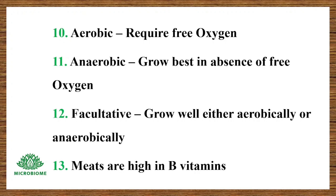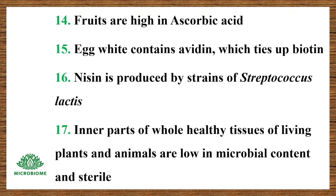Meat is high in B vitamins. Fruits are high in ascorbic acid. Egg white contains avidin, which ties up biotin. A substance produced by strains of Streptococcus lactis — inner parts of whole healthy tissues of living plants and animals are low in microbial content and sterile.